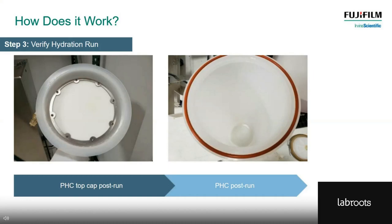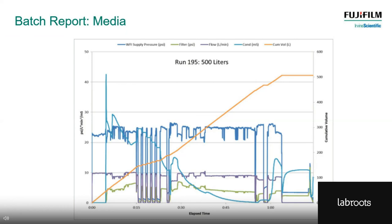One of the things we do as we run the development process is inspect the inside of the media cartridge after a run — looking at the coarse filter at the top of the cartridge that protects the sterilizing-grade filter, and looking down at the base to make sure there are no powder residues. On the skid itself, there are a number of sensors monitoring and controlling the process, which produces a dataset. The orange line is the total volume. The darker blue line across the middle is the water supply pressure. The light blue line is conductivity, spiking at the beginning and gradually dropping down to zero.